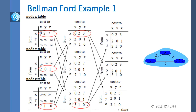So to summarize: you send your whole table to your neighbors, and the neighbors recalculate based on this new knowledge. If there is any change, they tell their neighbors. This continues until there is no more change.